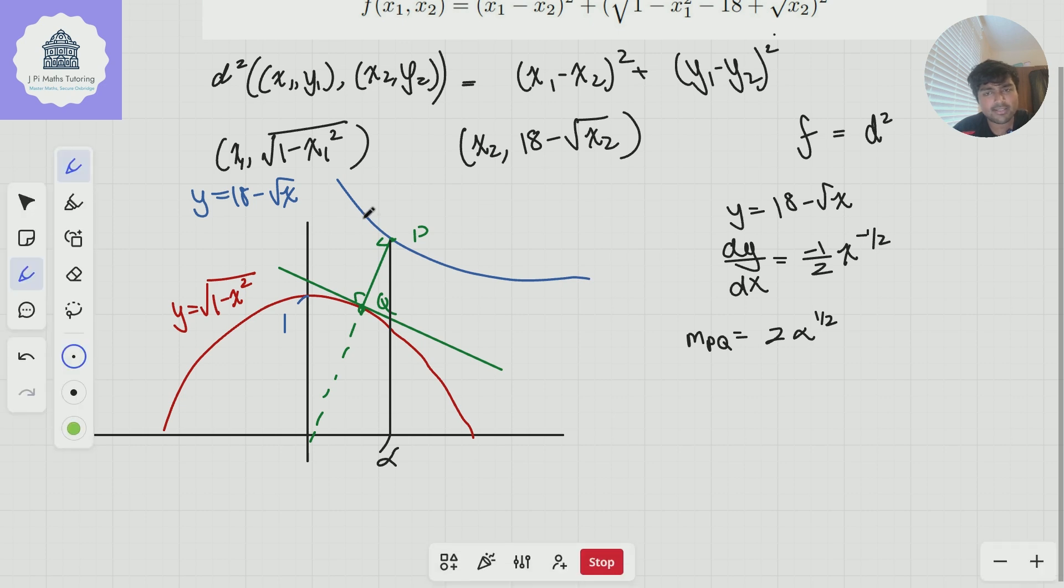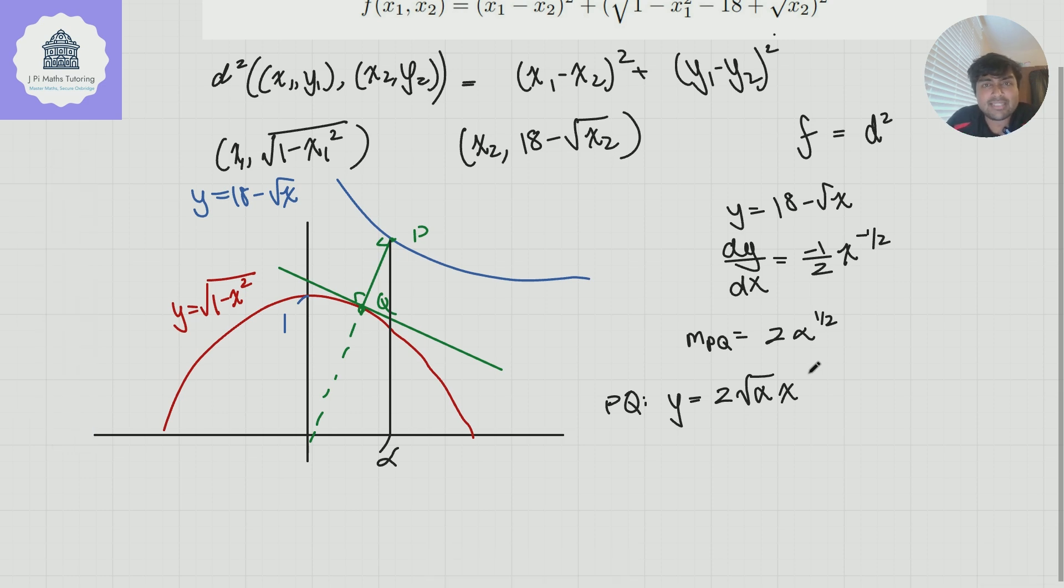So let's do some calculus on the side here. So we know that the blue curve has equation y equals 18 minus √x. And so dy/dx, it's not too difficult to work out that this is just negative a half x to the minus half. So that there represents the gradient of the blue curve. Now, if I give P the x coordinate alpha, I can deduce that the gradient of PQ, which remember the line PQ is perpendicular to the curve y equals 18 minus √x, so m_PQ is going to be 2α^(1/2).